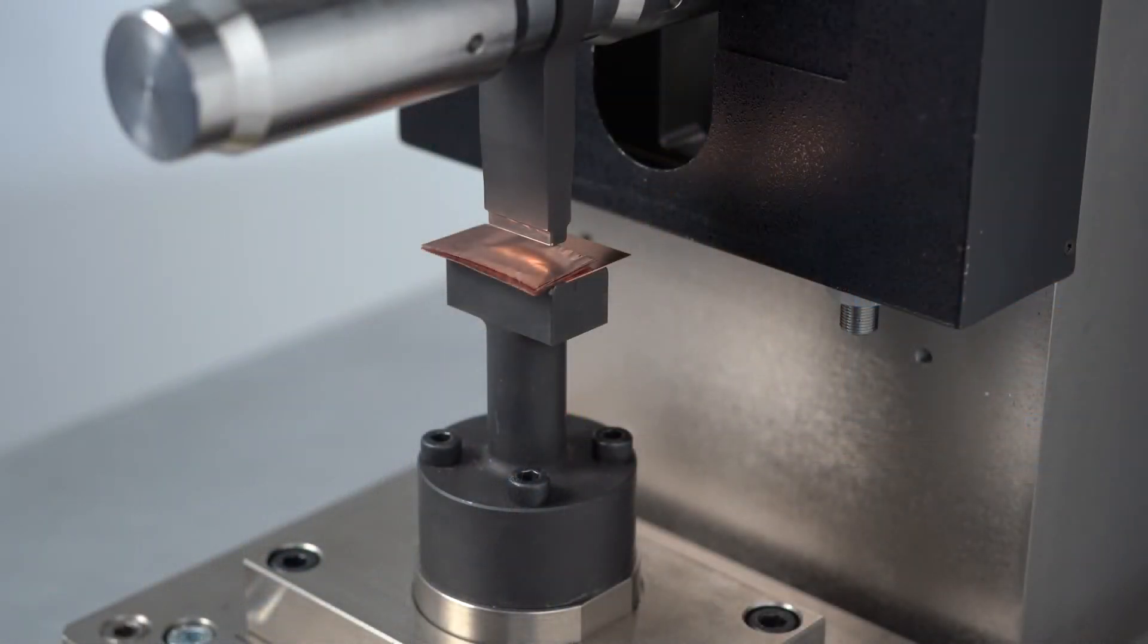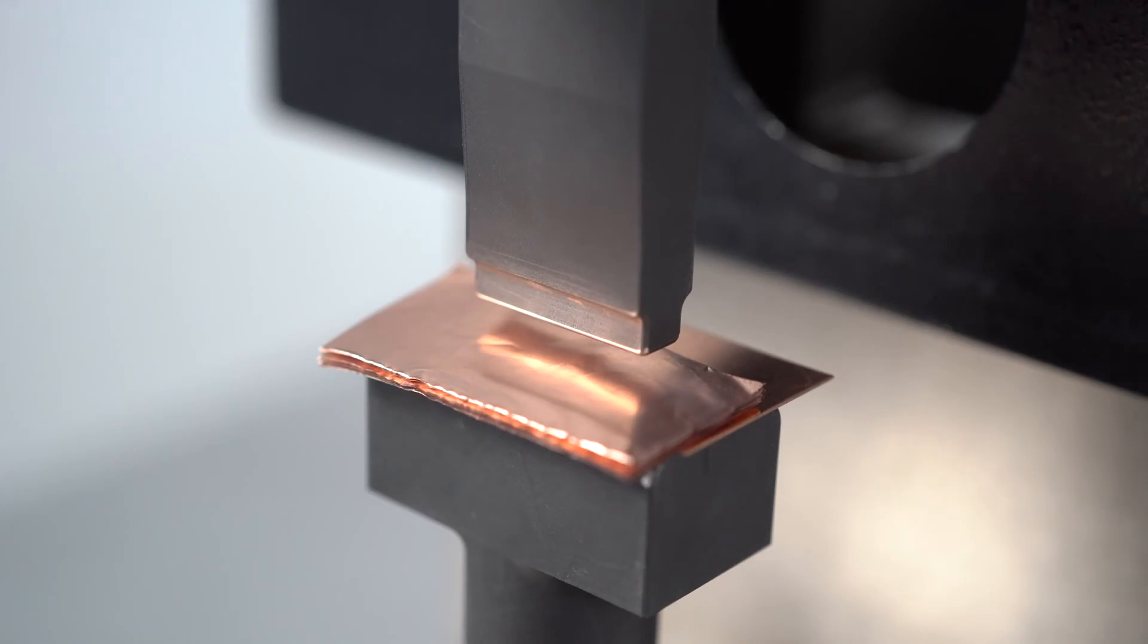we will use the GMX20DP to weld 70 layers of copper foils with 6 microns onto a copper tab using a horn with only a slightly roughened pattern.